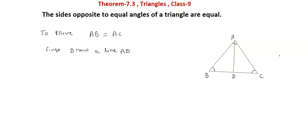Draw a line AD, angle bisector of angle A. So here this AD line is the bisector of angle A. This AD divides the A angle into two equal parts: angle BAD is equal to angle CAD.